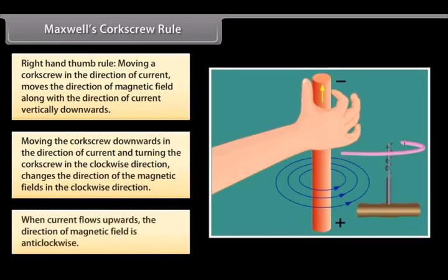So, when current flows upwards, the direction of magnetic field changes and is anticlockwise.